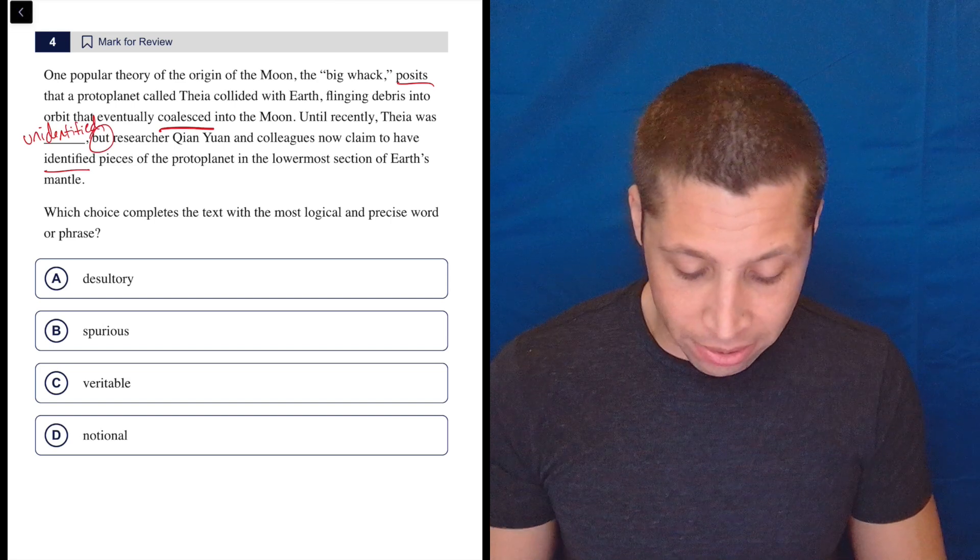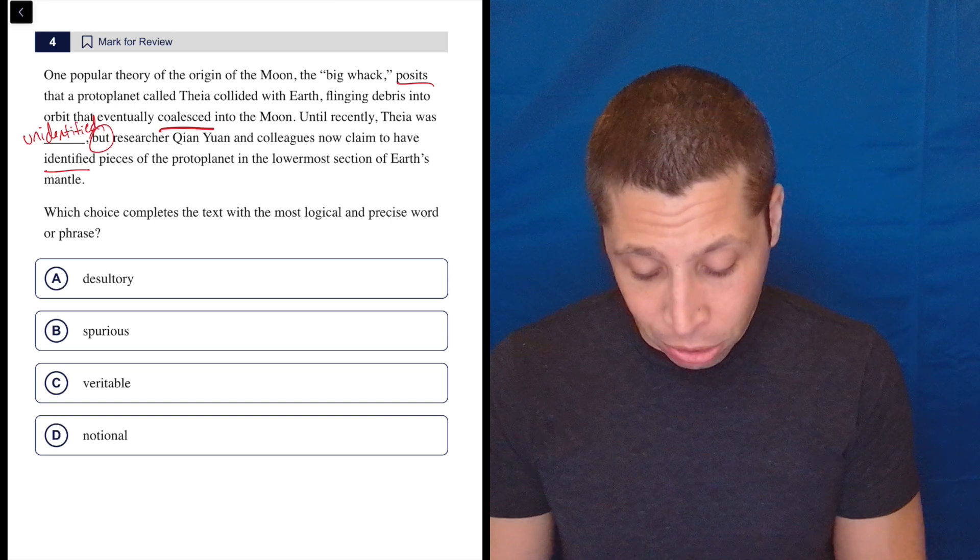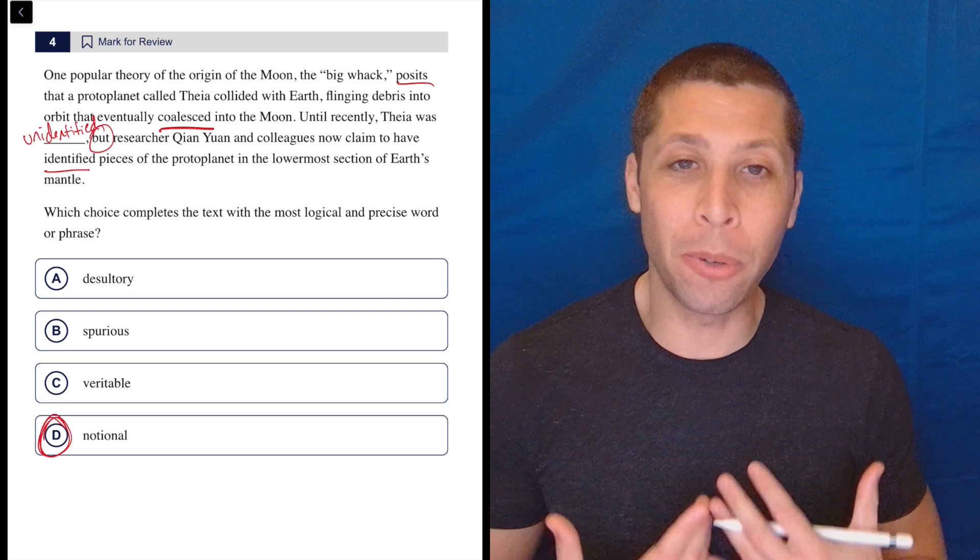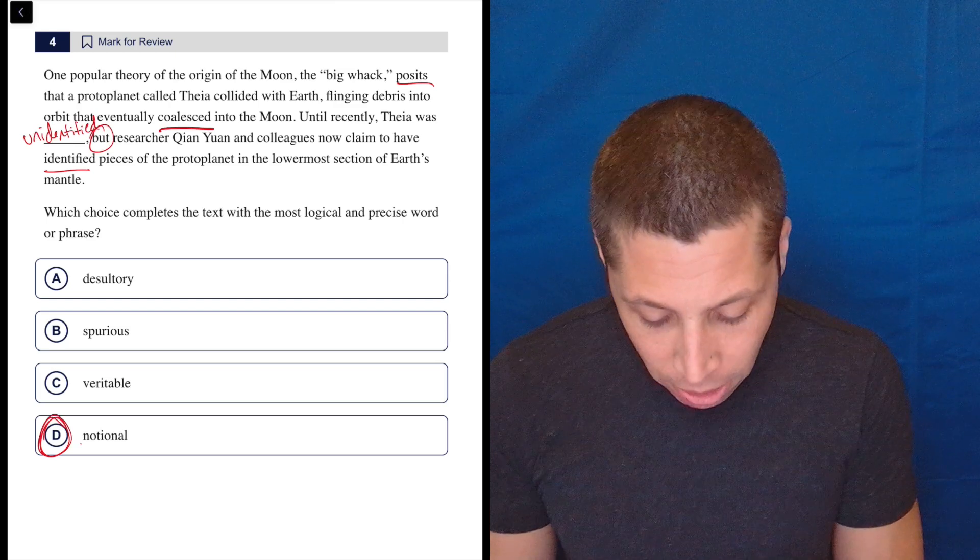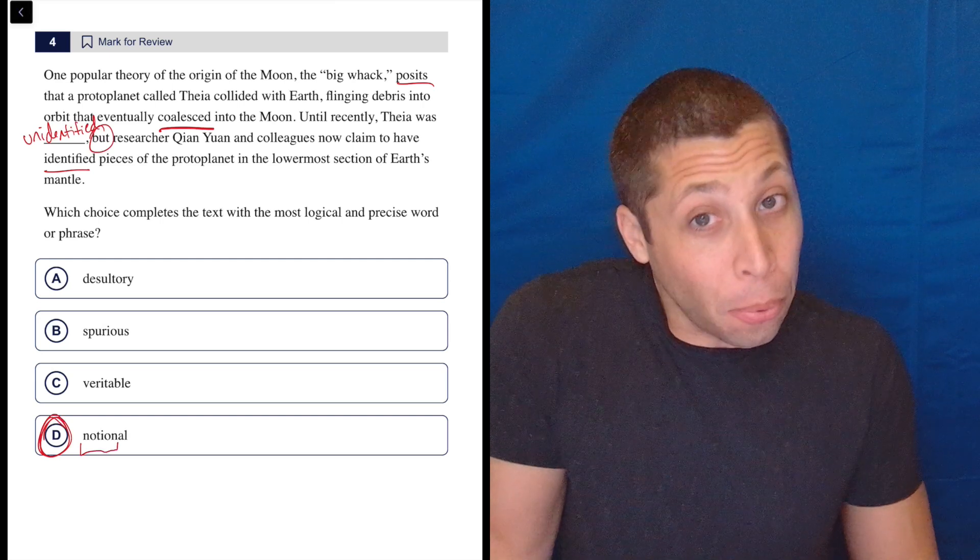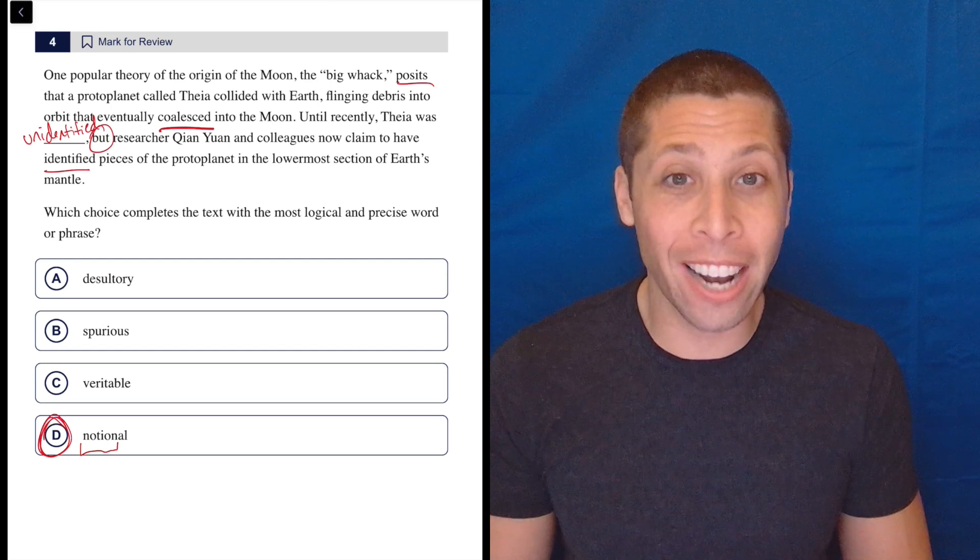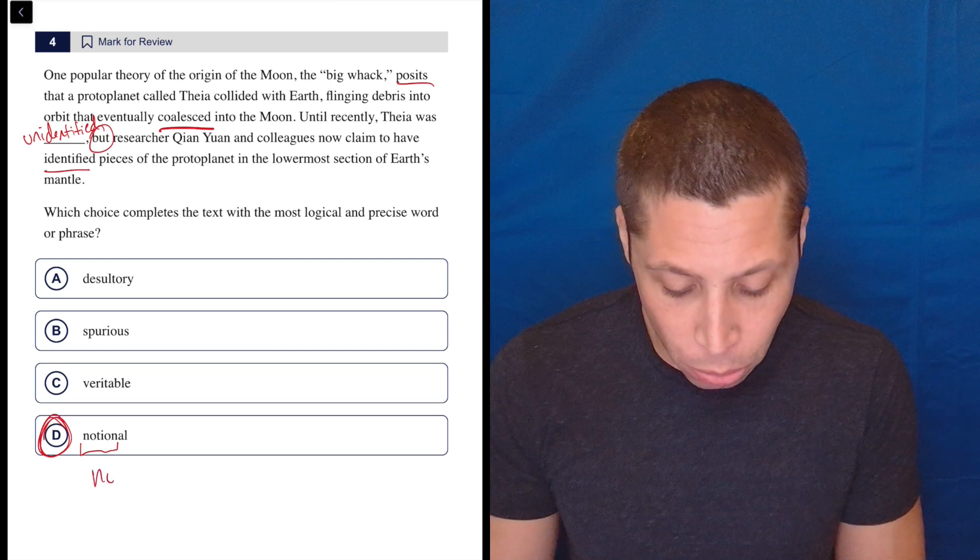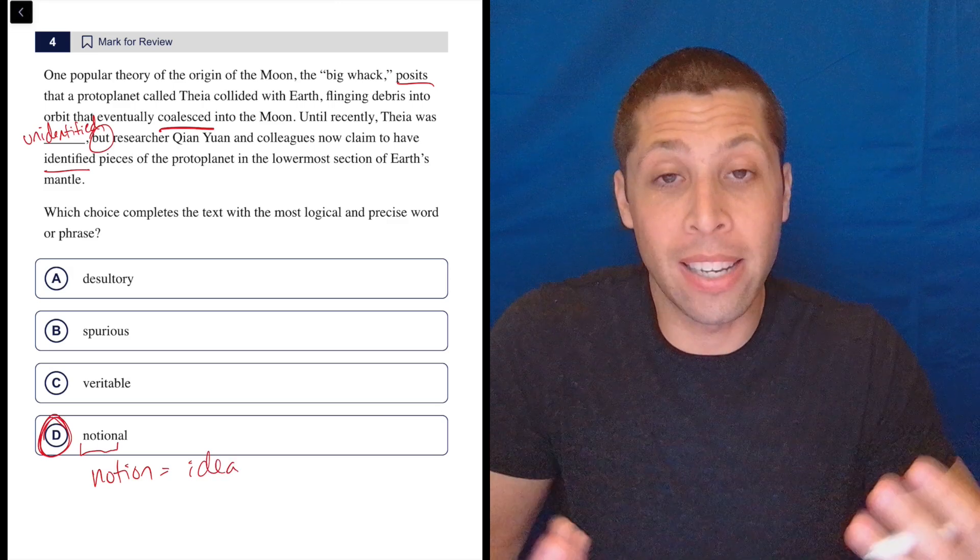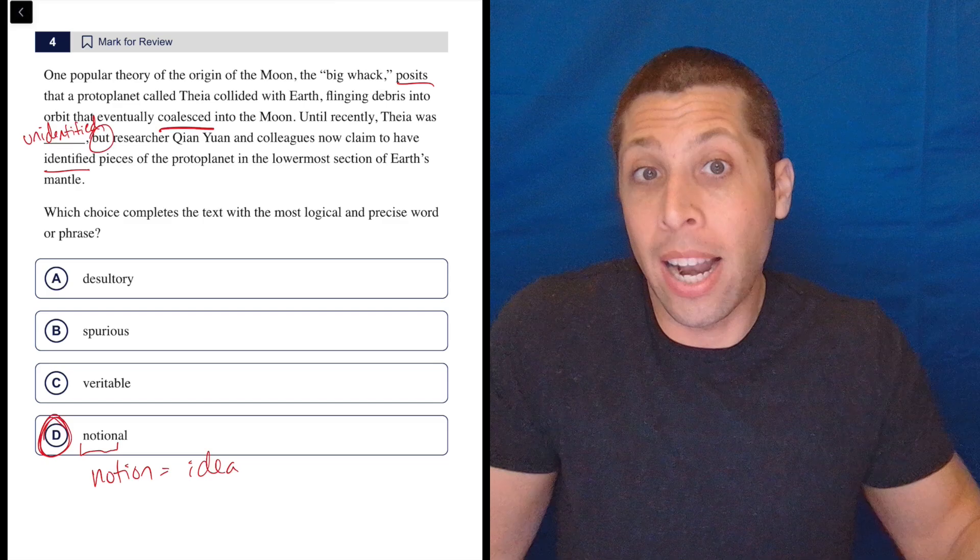So then we look at these choices. And even if you don't know three of them, the one that's the answer, notional, is not that uncommon of a word. I probably wouldn't use it very often, but the word that it's derived from, the word notion, that's a pretty common word. It's not like an everyday word, but it's not that crazy of a word for you to know. A notion is kind of just like an idea, like a feeling. It's not something proven. It's not a fact, necessarily. It is an idea.